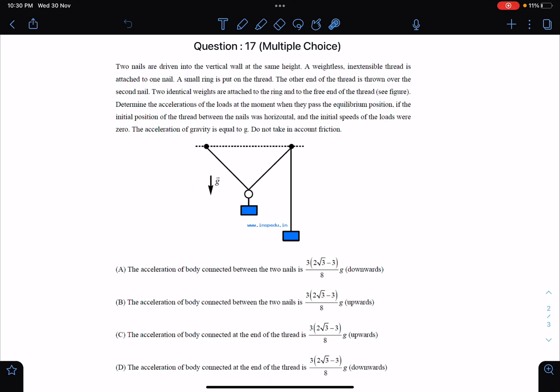At the same height, a weightless inextensible thread is attached to one nail and a small ring is put on the thread. The other end of the thread is thrown over a second nail and two identical weights are attached to the ring and to the free end of the thread.